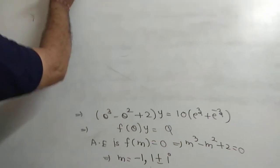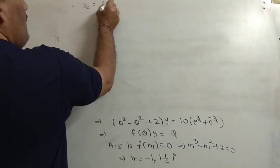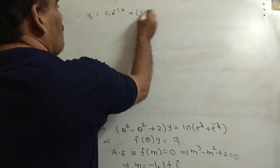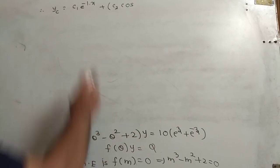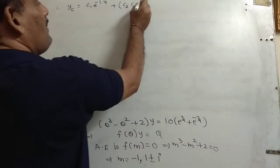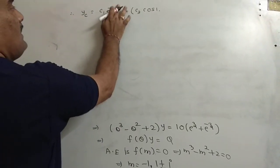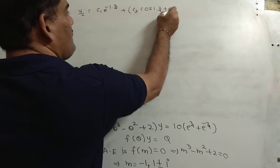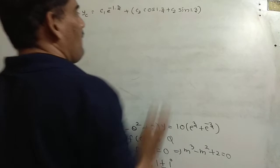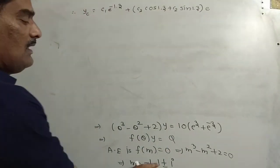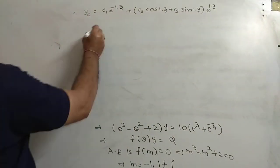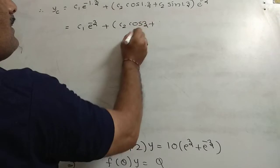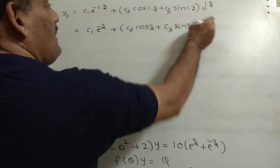Based on these roots, write down yc. The real root m = -1 gives c1·e^(-z). For the complex roots m = 1 ± i, the real part is 1 and imaginary part coefficient is 1, giving e^z(c2·cos z + c3·sin z). Therefore yc = c1·e^(-z) + e^z(c2·cos z + c3·sin z).